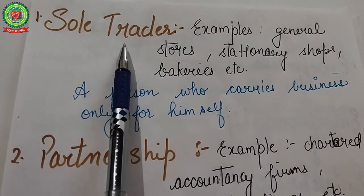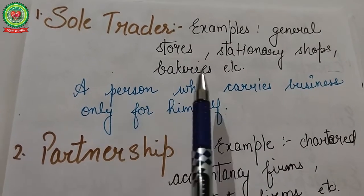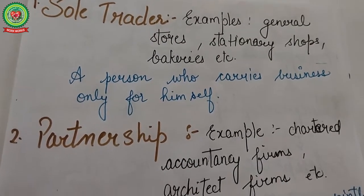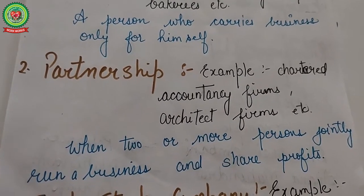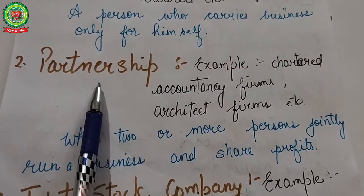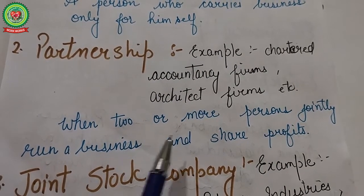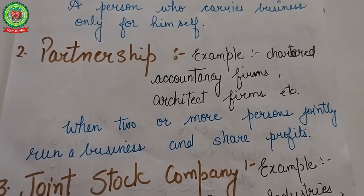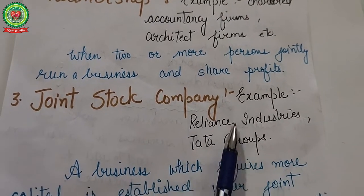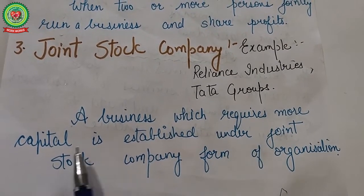Next key term is sole trader. For example, general stores, stationery shops, and bakeries. A person who carries on a business only for himself is called a sole trader. Next is partnership — for example, chartered accountancy firms and architect firms. When two or more persons jointly run a business and share profits equally, it is called a partnership firm. Then there is joint stock company — for example, Reliance Industries and Tata Groups — a business which requires more capital and is established under the joint stock company form of organization.